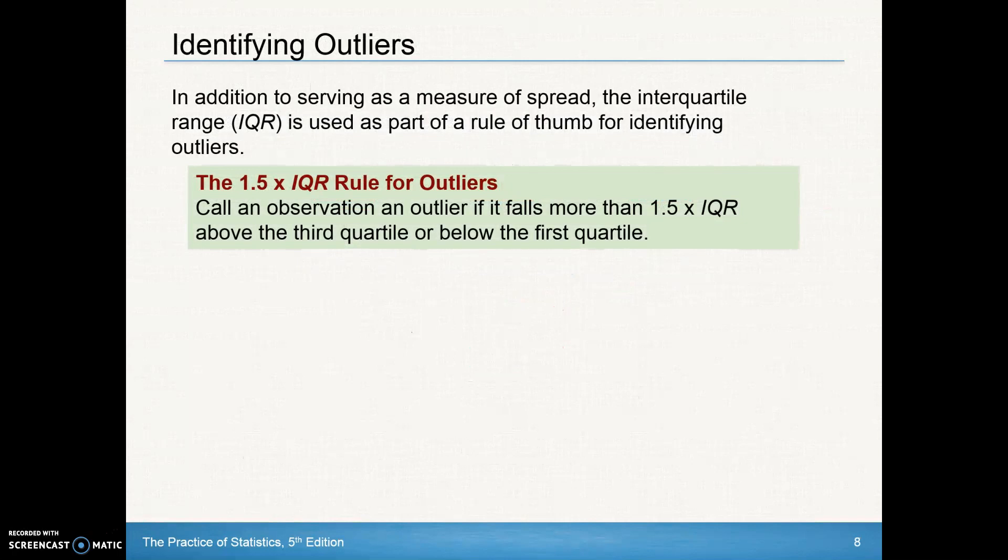In addition to serving as a measure of spread, the IQR is used as part of a rule of thumb for identifying outliers. We talked about outliers earlier as being away from the group of data. Now we're going to put a mathematical rule to that: the 1.5 IQR rule.